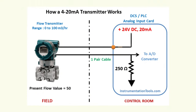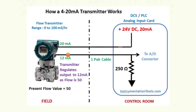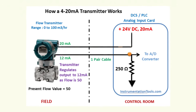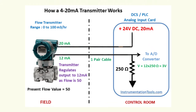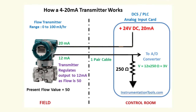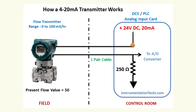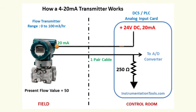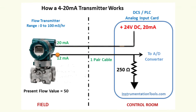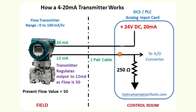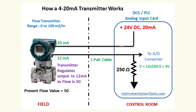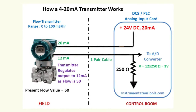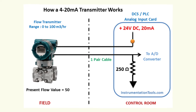Only two wires are used to accommodate both power to the transmitter and output signal from the transmitter. To facilitate a closed-loop control system, information from the process must be obtained before a controller can determine what action may be required by a control element. Some popular names for the sensing devices that provide the information are sensors, transducers, and/or transmitters.